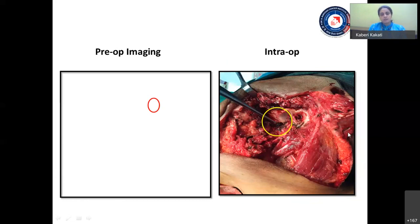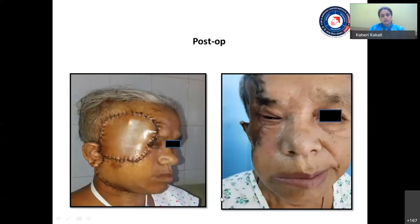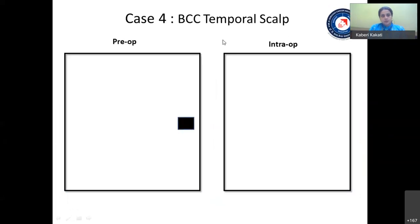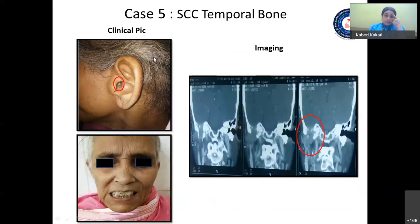Third case: recurrent adenoid cystic carcinoma with infratemporal fossa involvement, previously operated elsewhere. The foramen ovale was involved; however, given the adenoid cystic histology, we proceeded with surgery and found the tumor could be removed easily with a clear plane all around. The histology is very important — had it been squamous cell carcinoma, surgery would not have been pursued with foramen ovale involvement. Fourth case: squamous cell carcinoma of the temporal bone which appeared small in the ear canal with no facial palsy on presentation, but imaging showed tegmen erosion with intracranial extension; given the aggressive histology, surgery was not pursued.